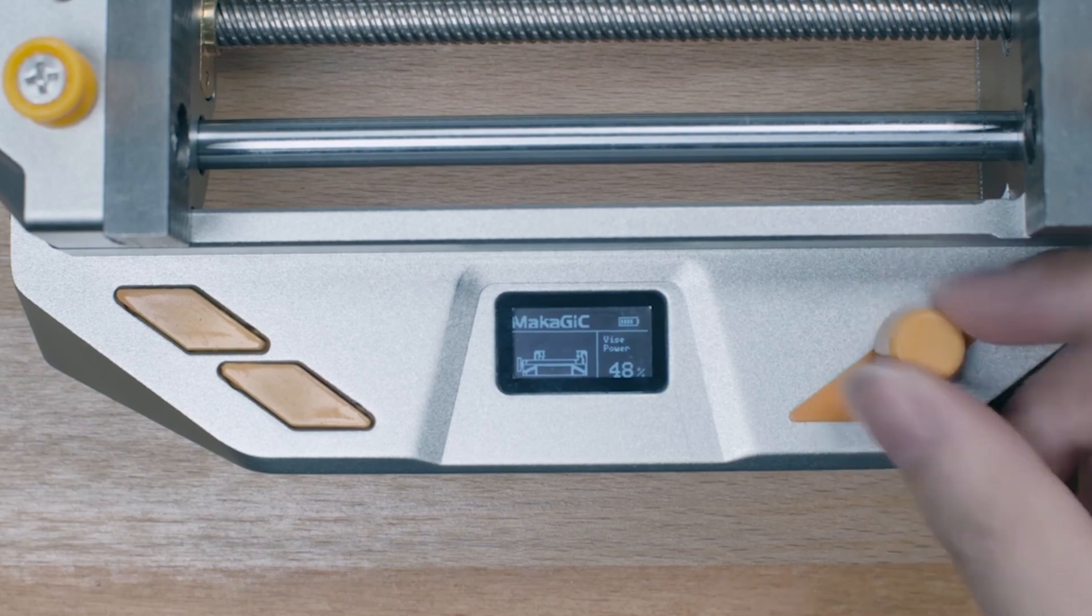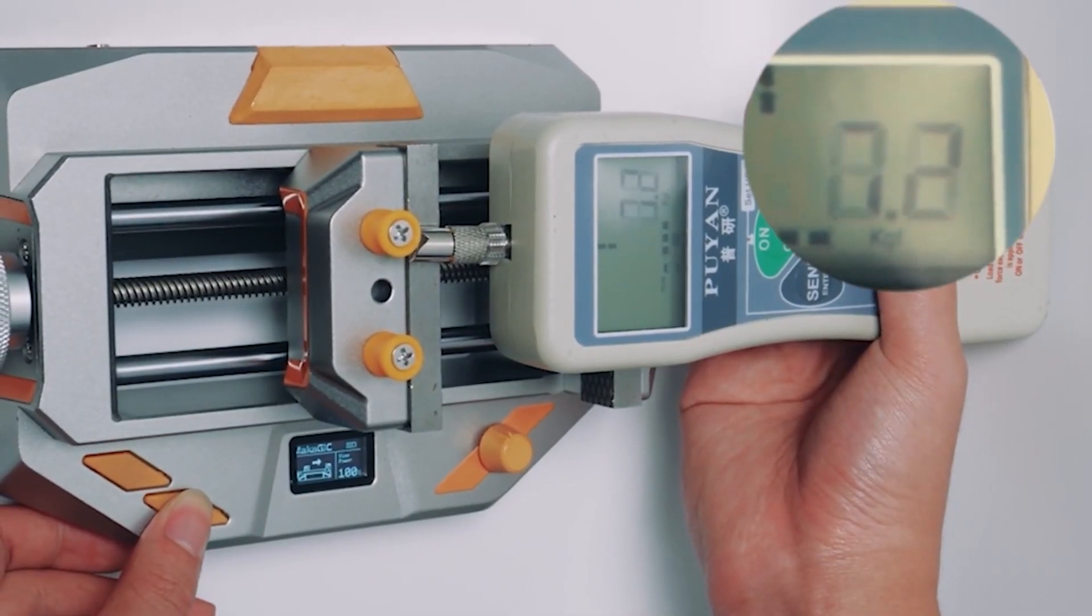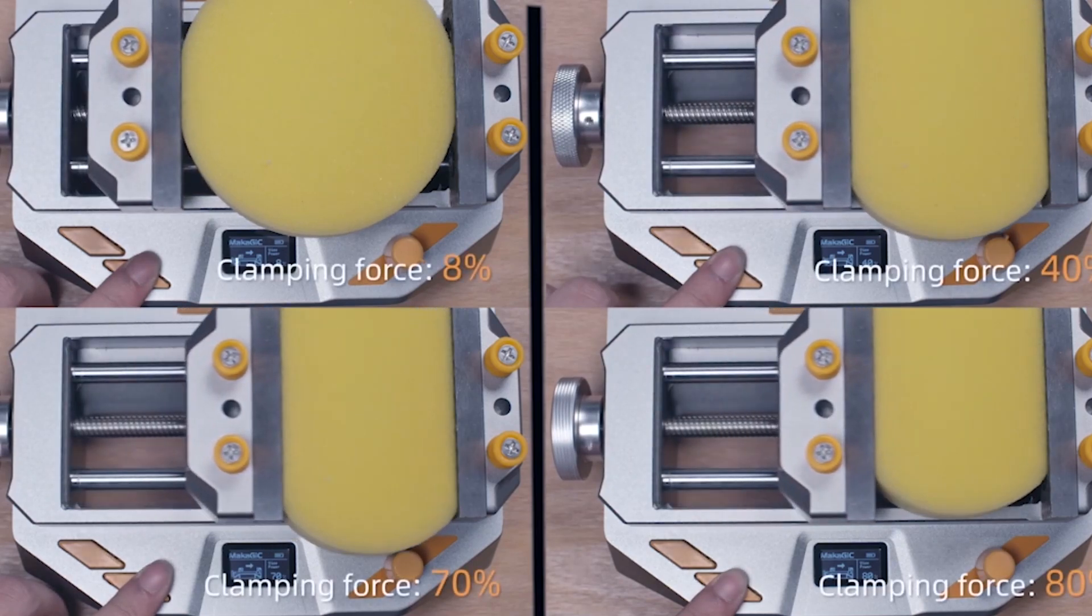Makajik has up to 100 adjustable gears and a wide range of clamping force up to 7 kgf. This way you don't have to worry about damaging the clamped object.